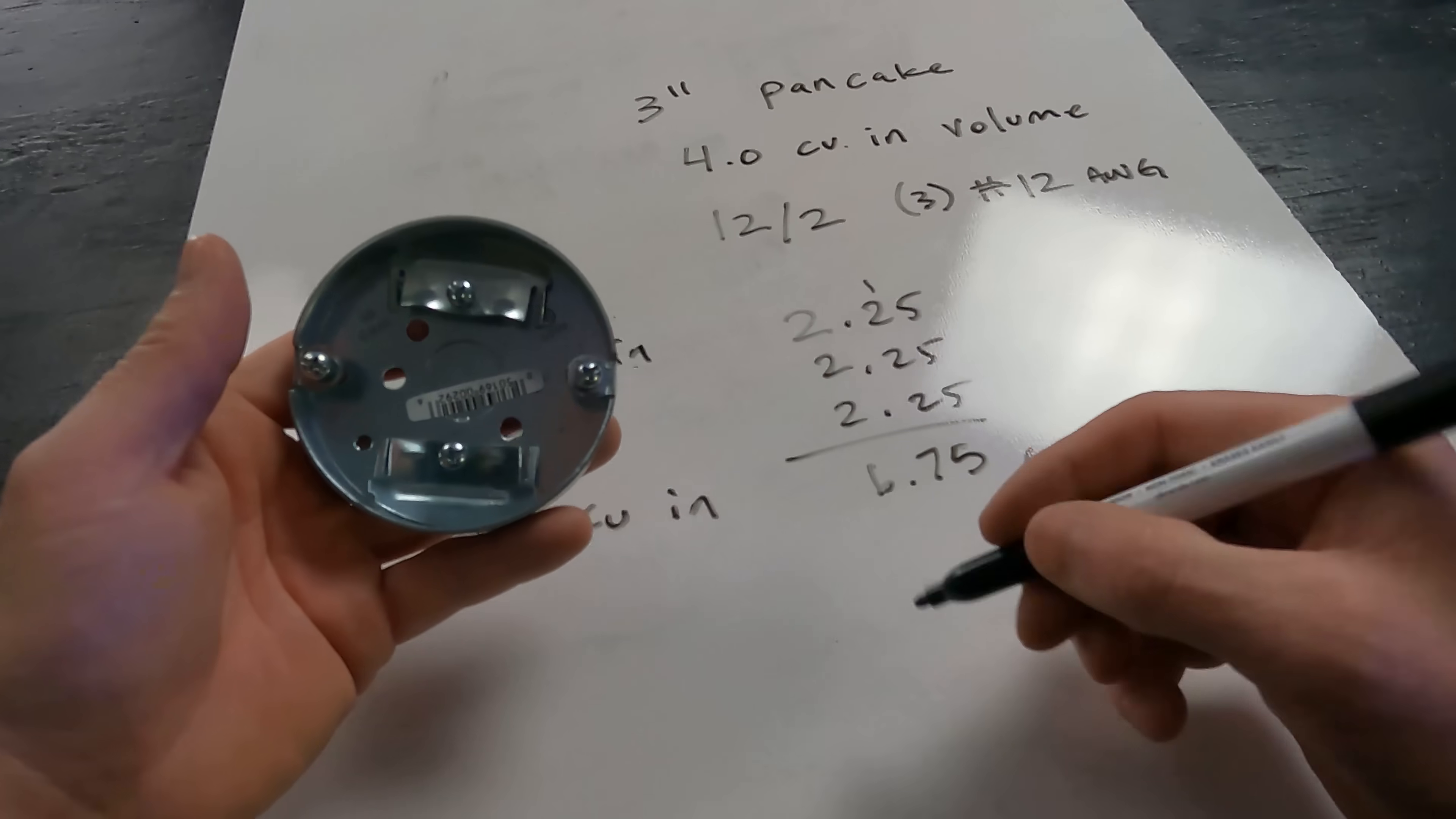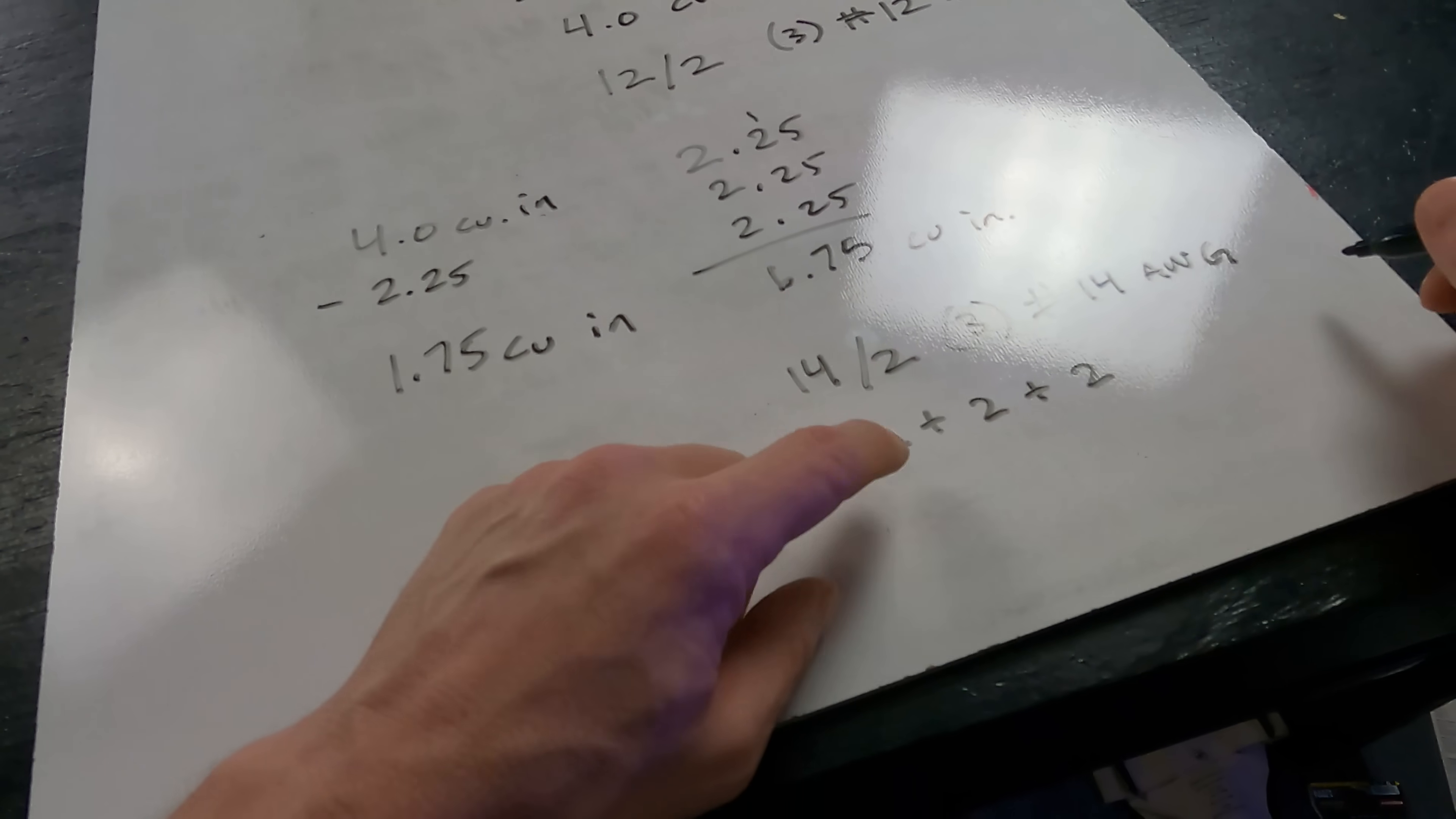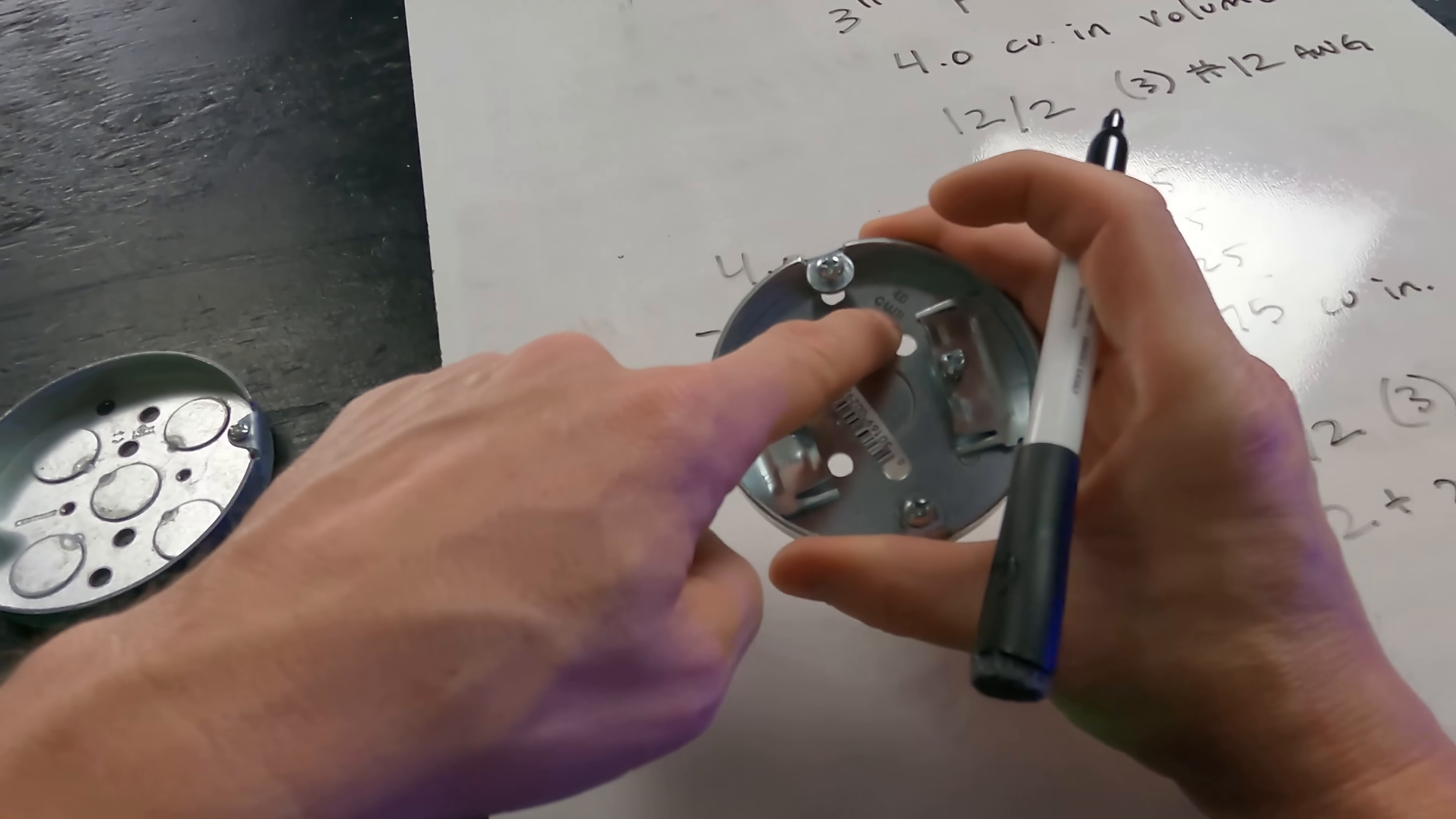What about if we did 14-2? If we have 14-2, that's three number 14s. According to Table 314.16b, for number 14 we get two cubic inches per conductor. In that situation, 14-2 is three conductors that are two plus two plus two, hot neutral ground. That's still six cubic inches. So there's no way we can use these and get away with code.